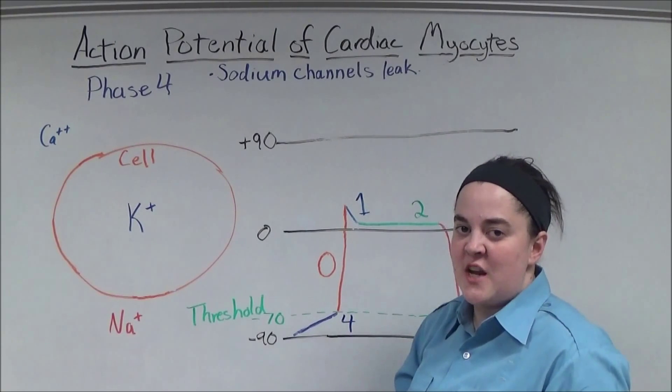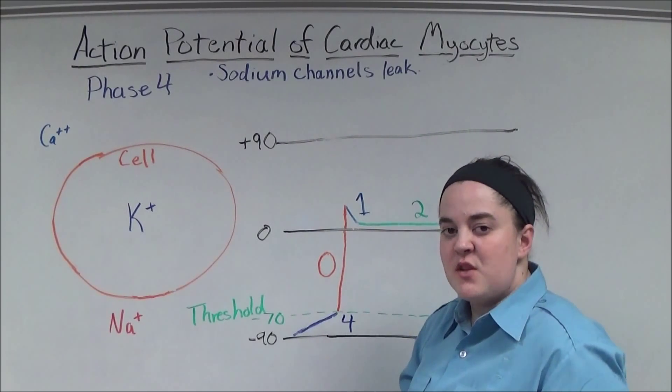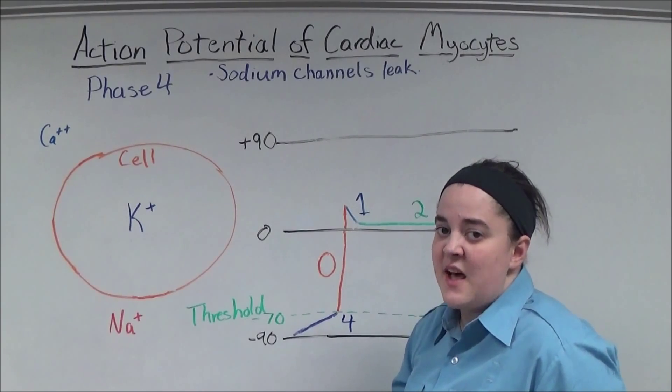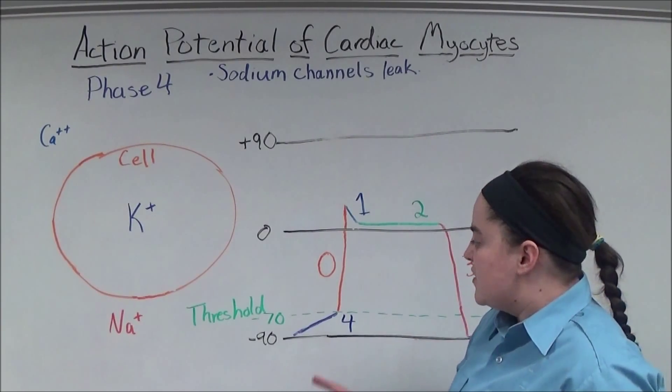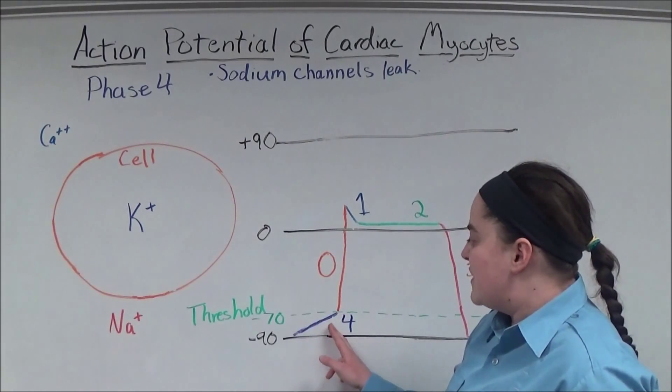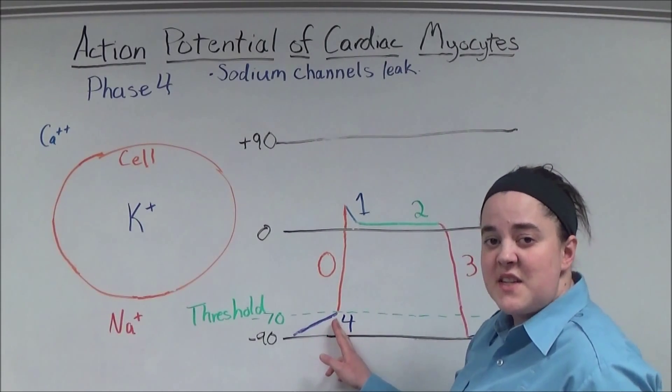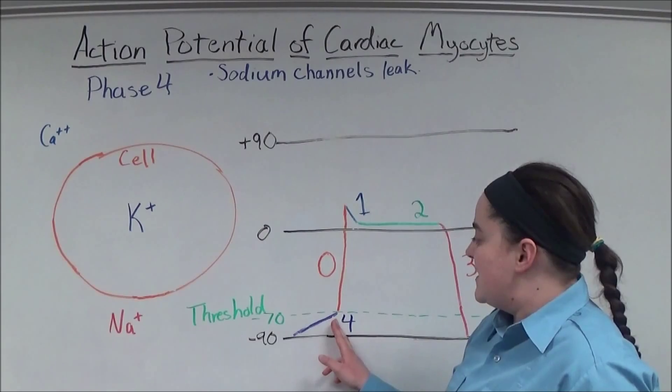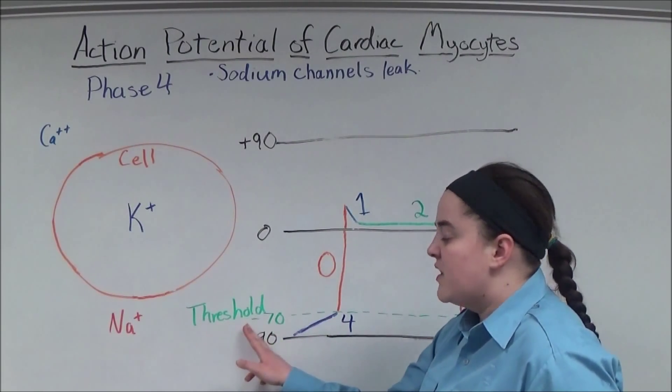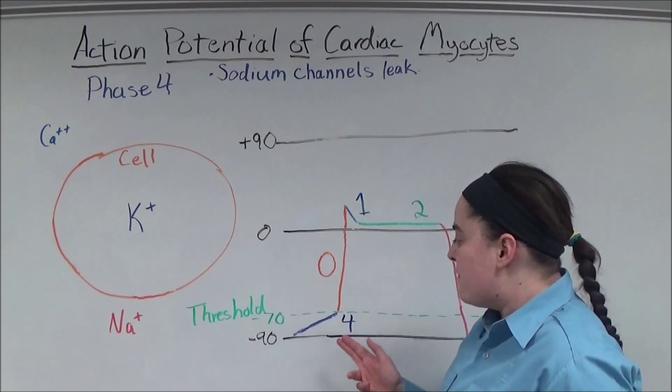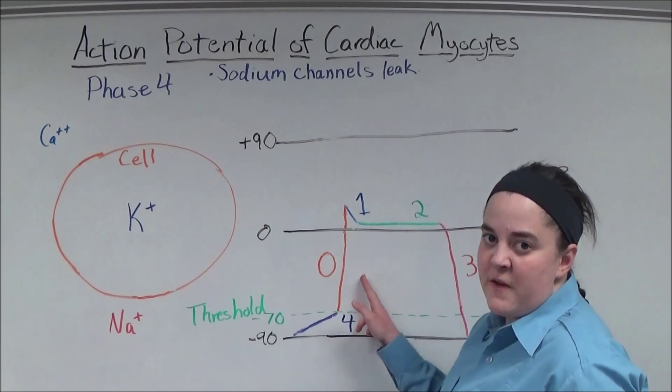However, the sodium fast channels leak, so some sodium is able to get inside the cell. Some of that sodium is pumped out, but not all. So over time, the action potential becomes more positive. Once it reaches negative 70 millivolts, that's threshold. Threshold is the end of phase four and the beginning of phase zero.